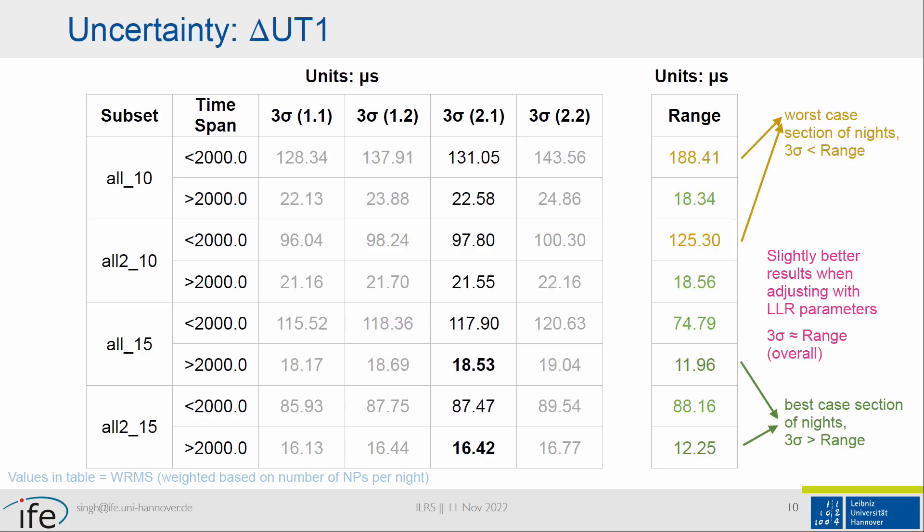When we look at delta UT — and that's more interesting because xp and yp can be estimated from many different techniques, whereas delta UT can only be estimated from VLBI and LLR — even though all numbers showed the same robust calculation, when we looked into the range, the numbers looked quite similar and the three sigma range looked quite good overall. If we take the worst subsets of nights, which is before 2000 with a loose selection criteria, the range is slightly bigger than three sigma. For the best case scenario — post-2000 with very strict selection criteria — the range is smaller than three sigma. But overall it looks quite good. We also see that delta UT is estimated much better when estimated together with the Lunar Laser Ranging parameters.